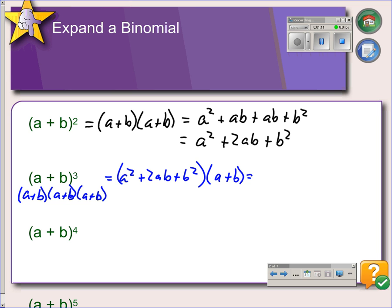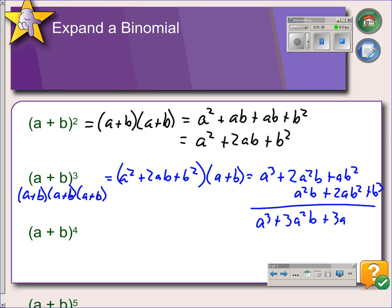When we multiply this, we get a³ + 2a²b + ab². And then distributing the b, we get a²b + 2ab² + b³. Adding that together, we get a³ + 3a²b + 3ab² + b³.